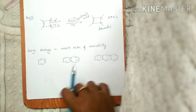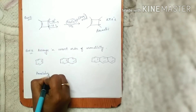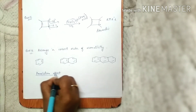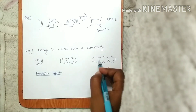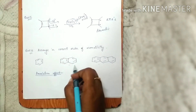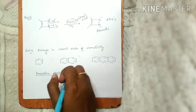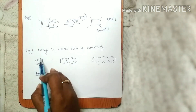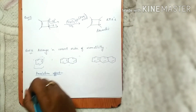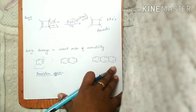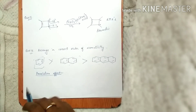For the last question, number 16 — arrange these three structures in the correct order of aromaticity. There is a term called the annihilation effect. According to it, whenever we increase the number of cyclic structures, aromaticity decreases. This one has one ring, this one has two, and this one has three rings. As the number of rings increases, aromaticity decreases — so the first is most aromatic, then the second, then the third.